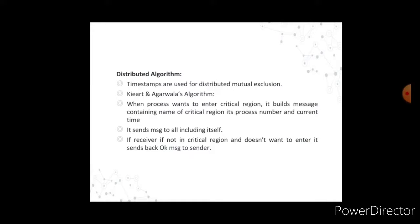If the receiver also wants to enter the critical region but has not yet done so, it compares the timestamp in the incoming message. The lowest timestamp wins. If the receiver's own message has a lower timestamp, it queues the incoming request and sends nothing. A drawback of this distributed algorithm is that if any process crashes, it does not respond to requests, which can be misinterpreted as denial of permission, causing all processes to block. Ricart and Agrawala's solution requires replies to always be given, either granting or denying permission. A bottleneck solution grants permission from a simple majority of processes rather than all.